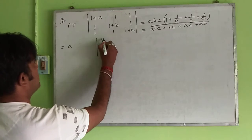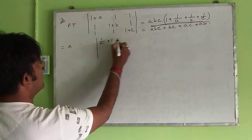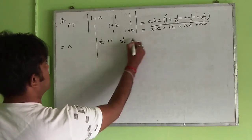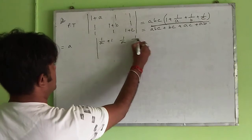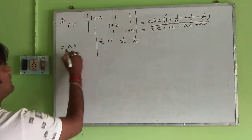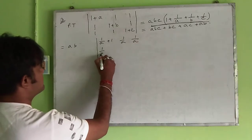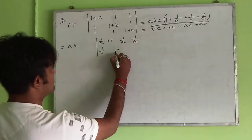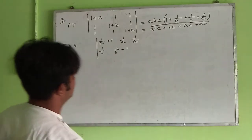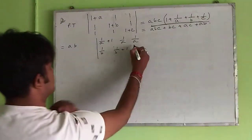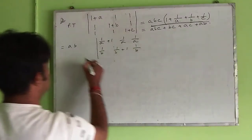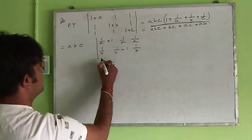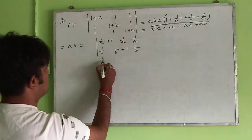Then what happens? 1 by A remains. Take common B, and take common C from the third row.